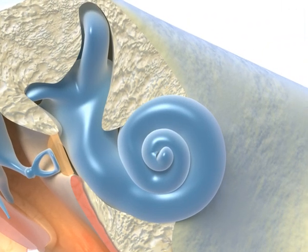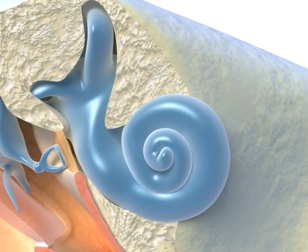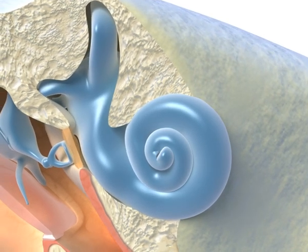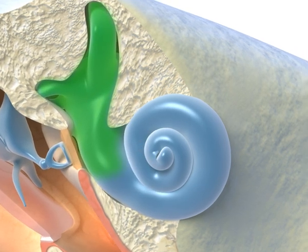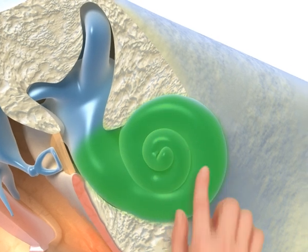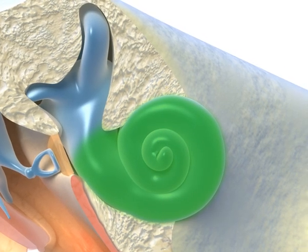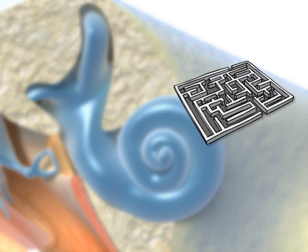The inner ear is located deep inside the skull and basically consists of two parts: the vestibule, where the organ of balance is located, and the fluid-filled cochlea. This contains the sensory cells that convert sound waves to nerve signals and then send them on to the brain. Due to its complex system of canals, the inner ear is often described as a labyrinth.